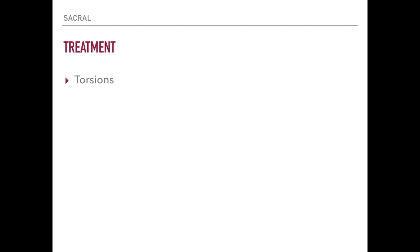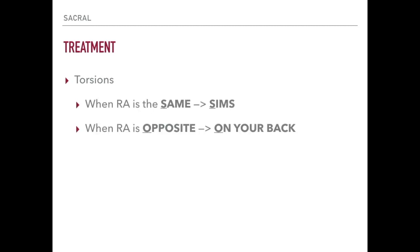The last thing to touch on is treatment. When rotation on the axis is occurring to the same side — for example, a left on left torsion — you put the patient in the Sims position. On the other hand, when rotation and axis are occurring in opposite directions — such as a right on left or left on right torsion — the patient is placed on their back. So: same direction equals Sims position; opposite directions equals supine.